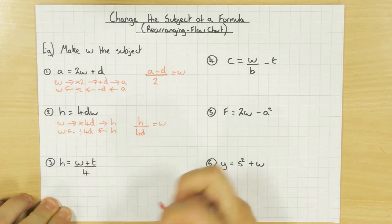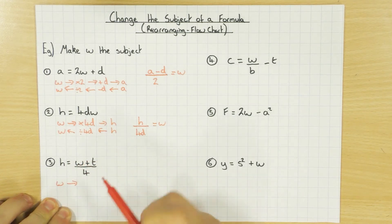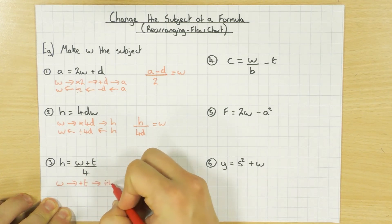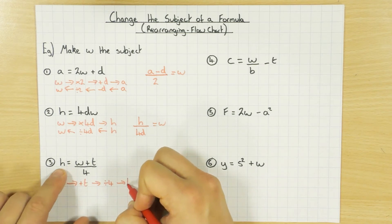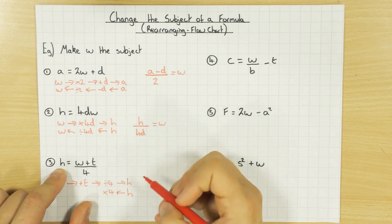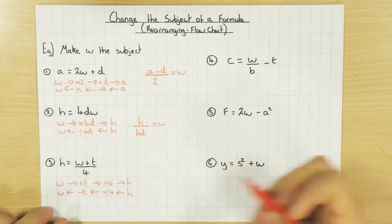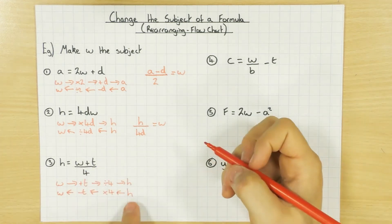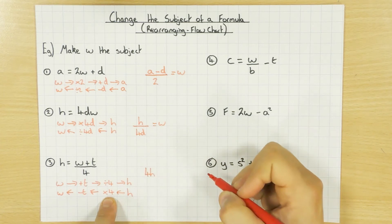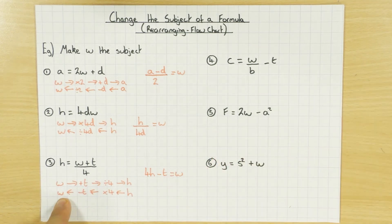Next one — so again there's my W, so I'm going to draw the flowchart. What's the first thing I do? Well, I need to add T before I can divide by four. So I add T first, then I divide by four, then I get the answer because that equals H. Go backwards: start off with H. Dividing by four — I do the opposite and times by four. Instead of adding T, I take away T and then I get back to W. So there's my H, I times by four — four times H is 4H — take away T, and then that equals W.